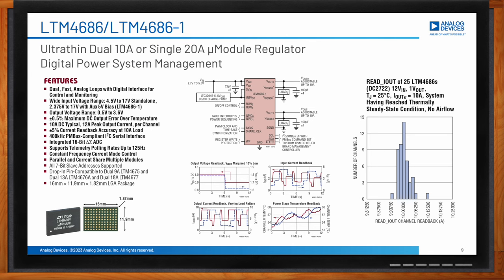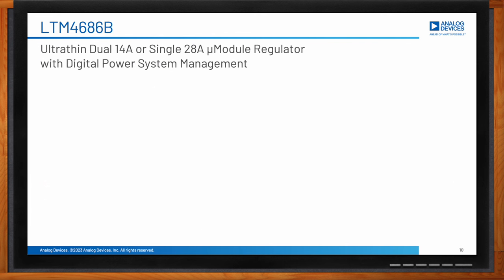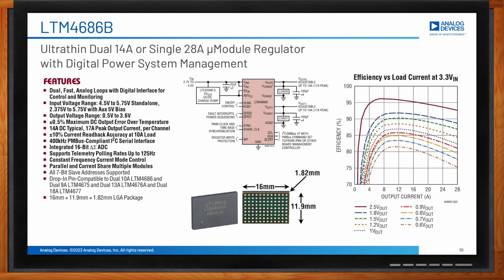What about the LTM4686B — that's a dual 14 amp or single 28 amp solution, right? Yes, that is correct. The LTM4686B is a dual 14 amp micromodule regulator with digital power system management. The input voltage range is 4.5 to 5.75 volts standalone, and can go down to 2.375 volts using auxiliary 5-volt bias. It provides telemetry read-back with high accuracy, and multiple LTM4686B units can be paralleled in a multi-phase configuration to scale up the output current.